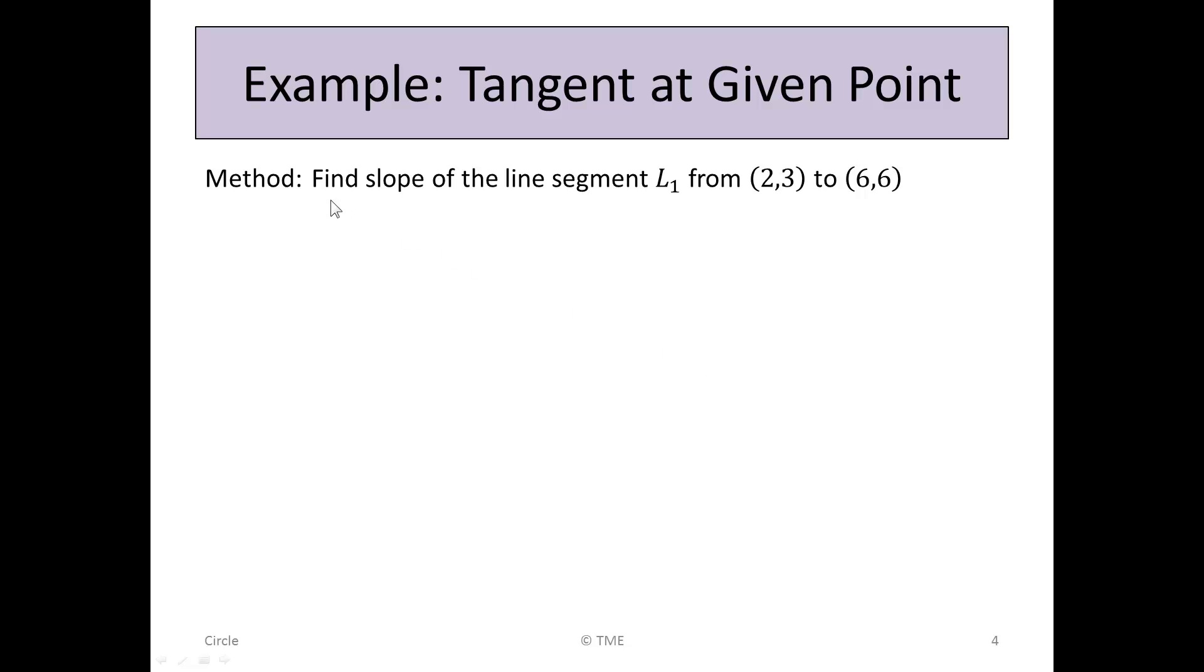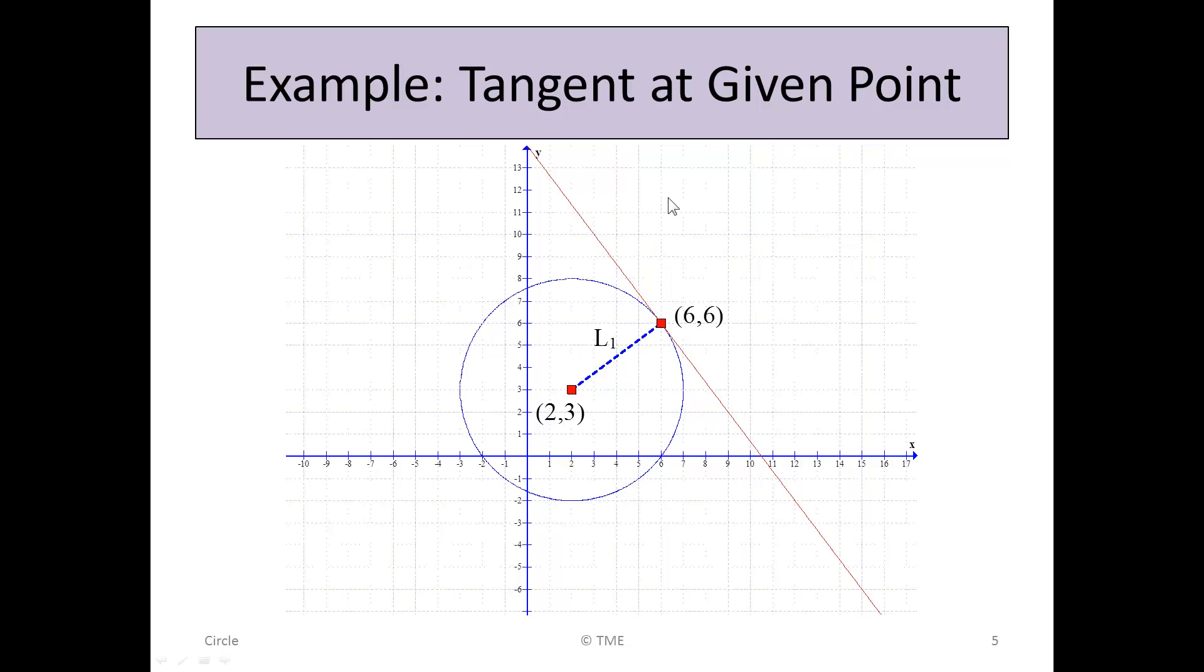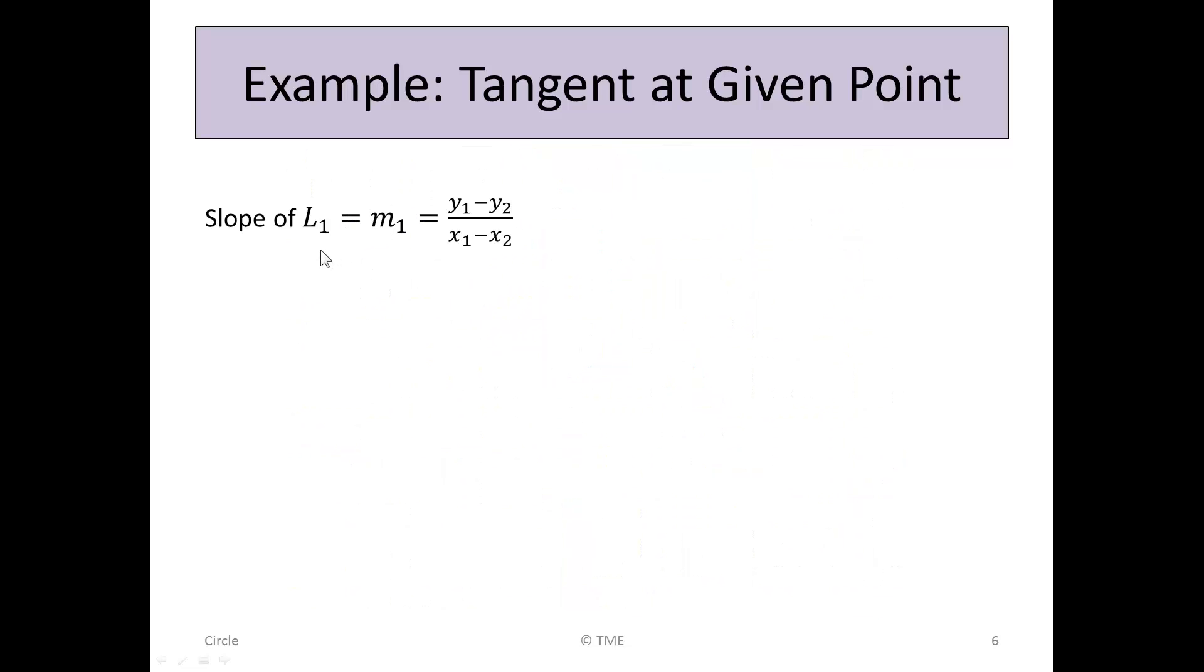So the method we're going to use is we're going to find the slope of the line segment L₁ first from (2, 3) to (6, 6). So we're going to start looking at this part here, L₁, and finding the slope. There's a method of doing this. There's a formula: M₁ is (y₁ - y₂)/(x₁ - x₂). Written in the tables just as M. That's the slope of the line.